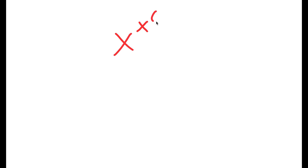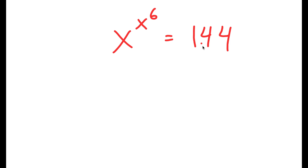In this video, I'm going to be solving the equation x to the power of x to the power of 6 is equal to 144. To solve this equation, I'm going to first start by taking the power of 6 on both sides.